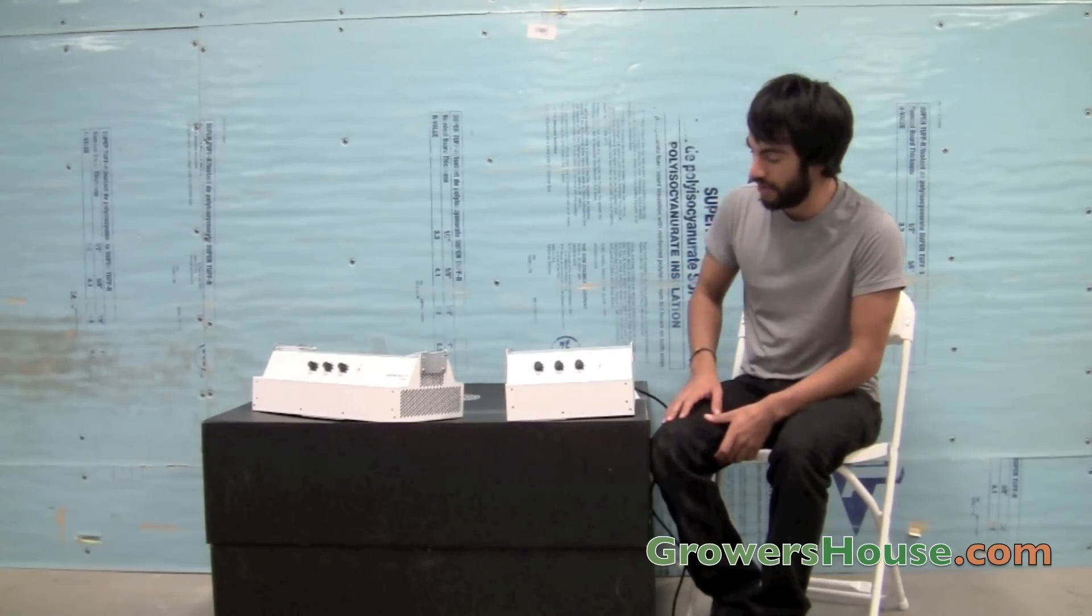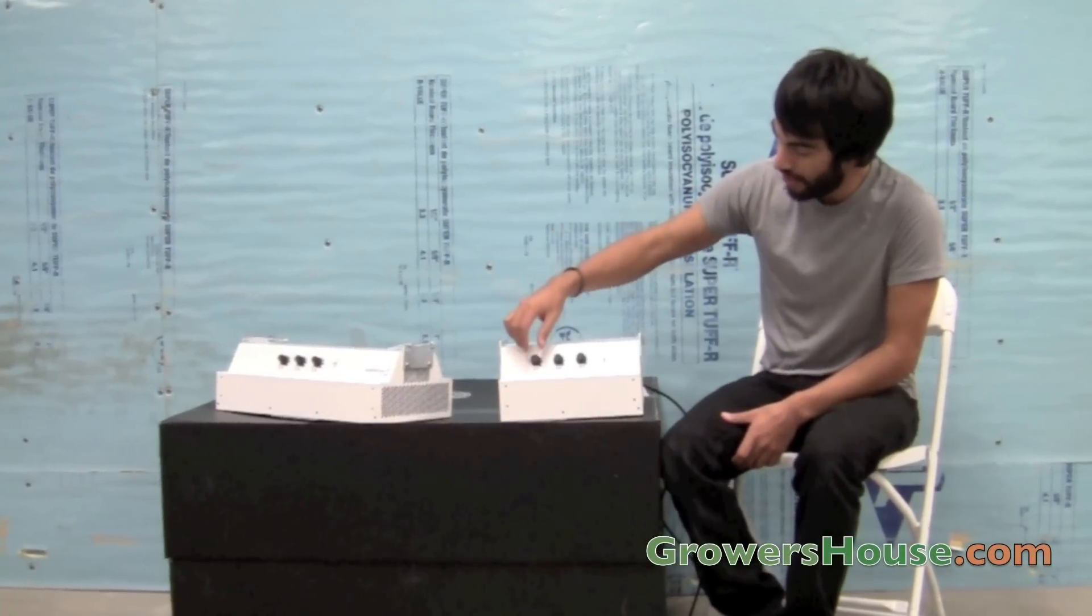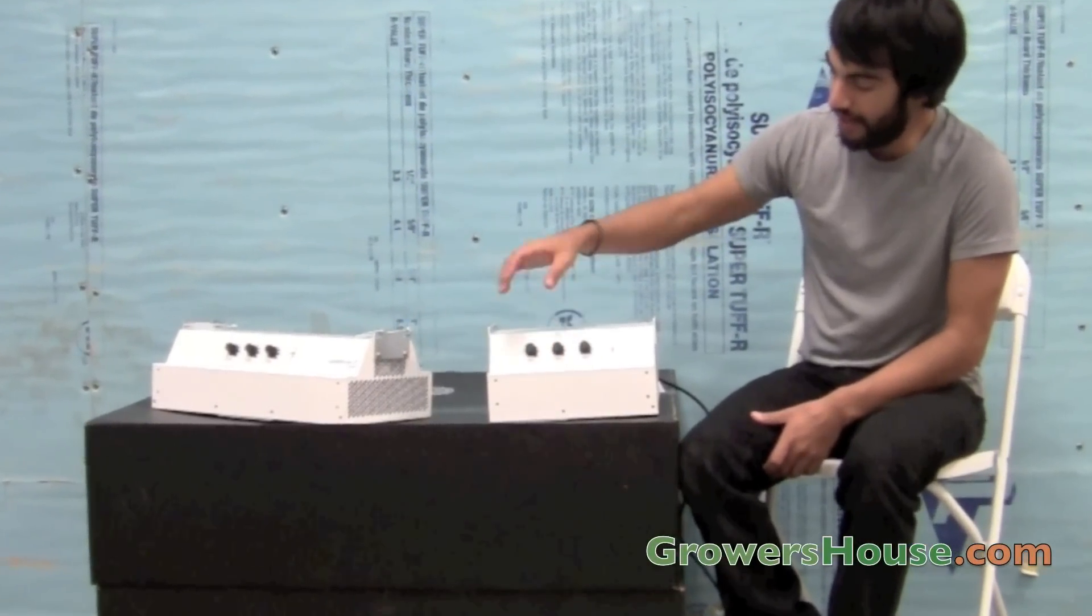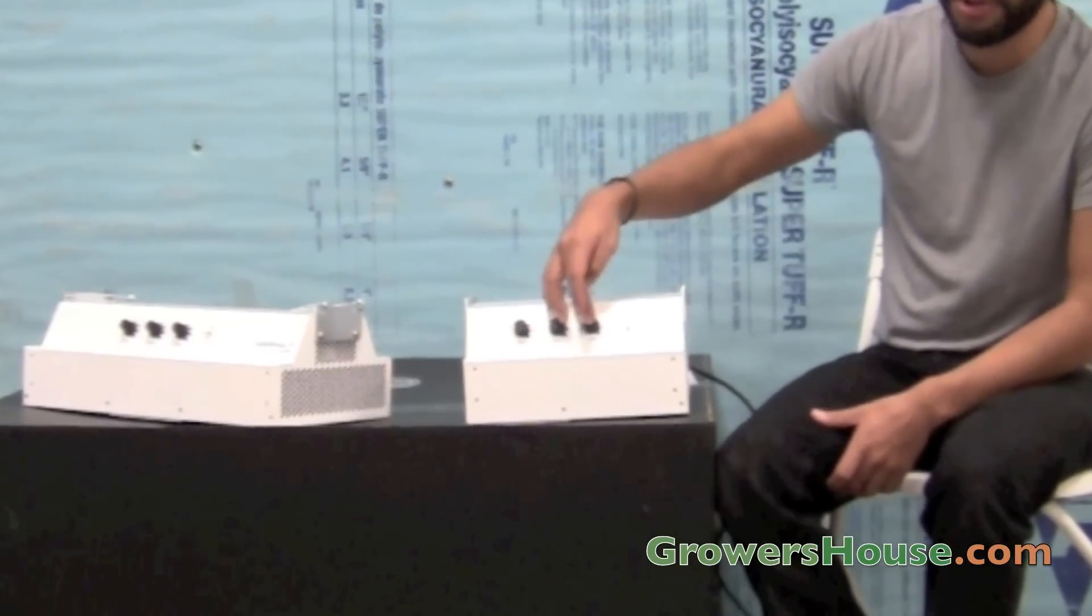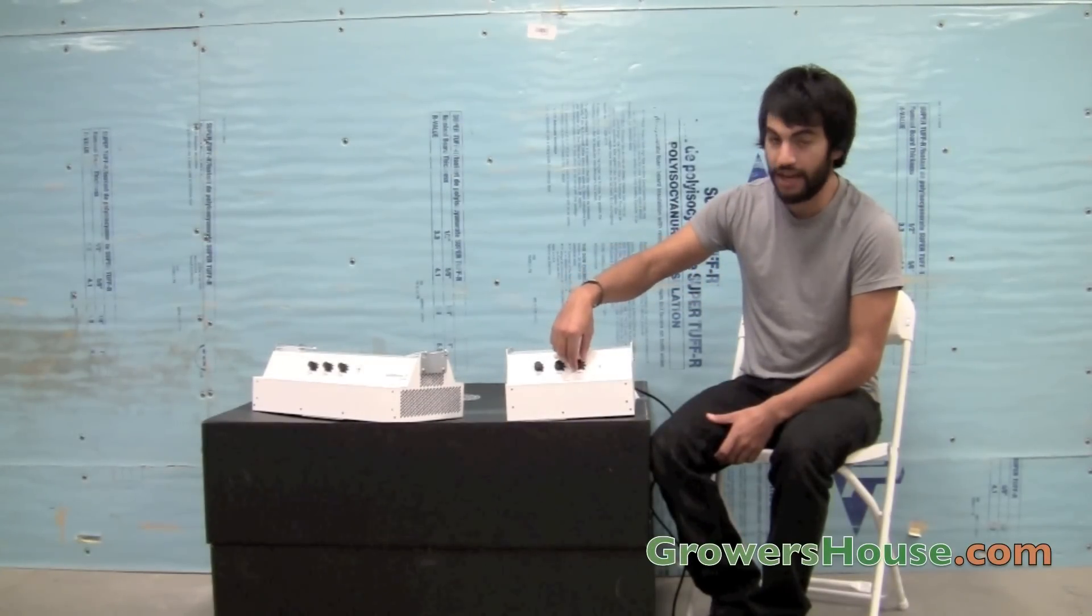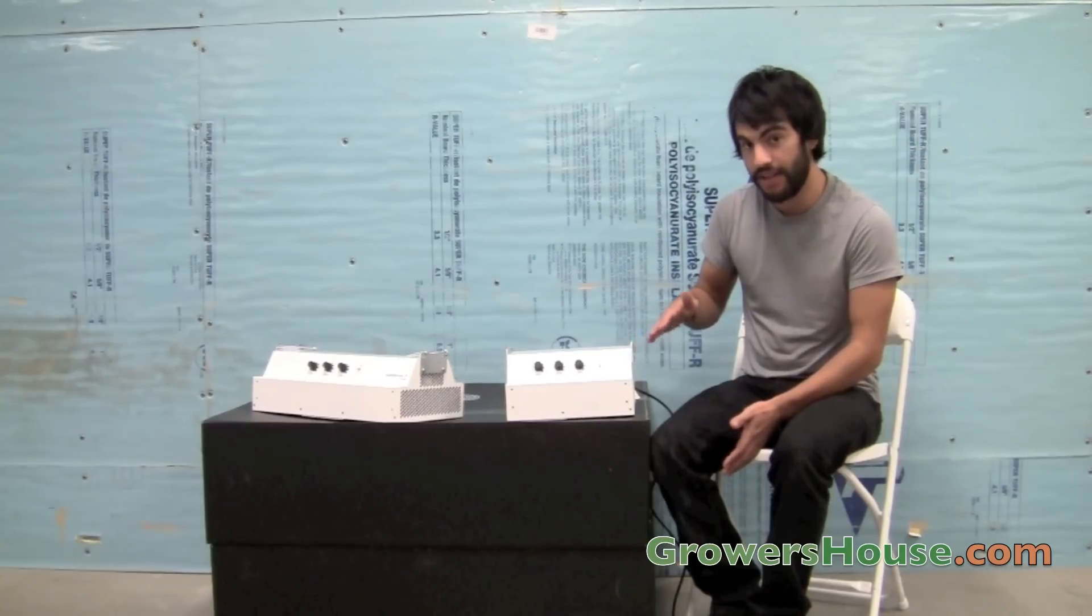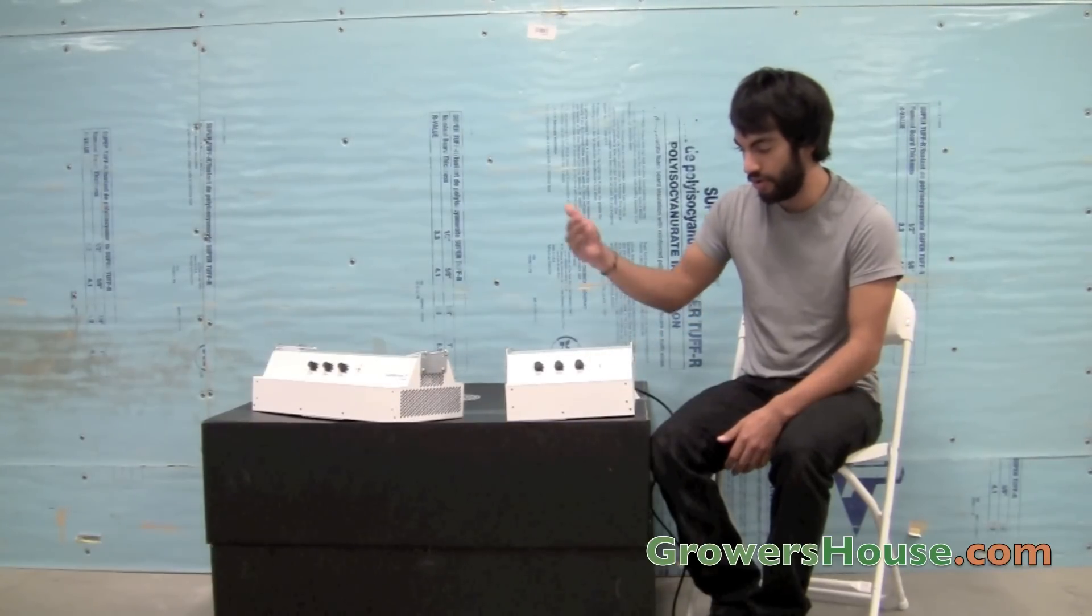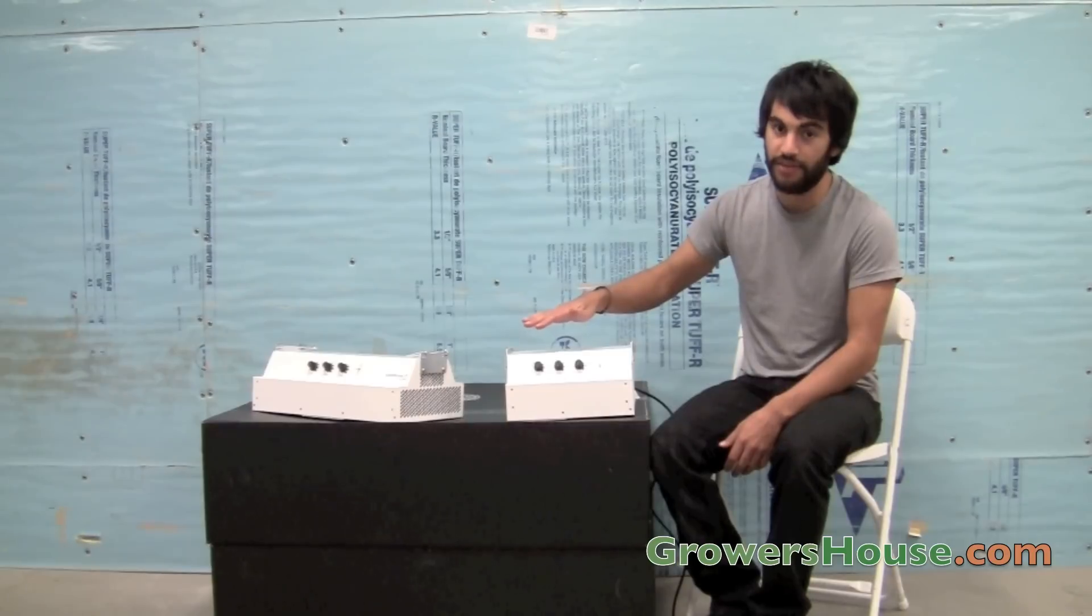Just before I turn it on, I want to give you a quick overview of the panel here. There are three dials that help you control the red spectrum, the white spectrum, and the blue spectrum. These knobs go from zero to ten, where ten is max intensity of that spectrum and zero is zero intensity.